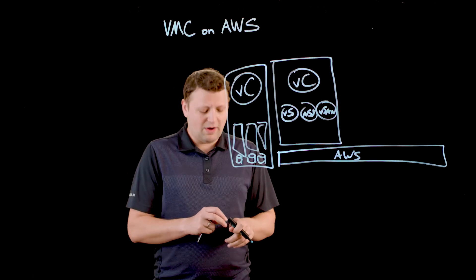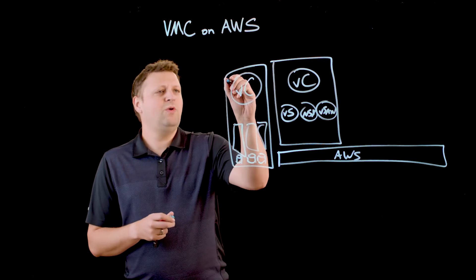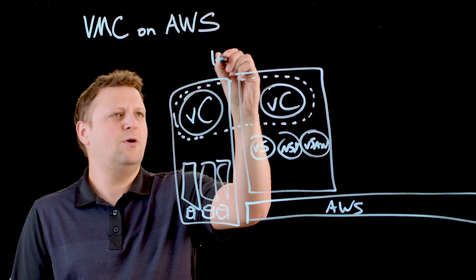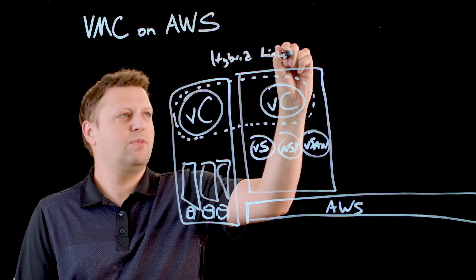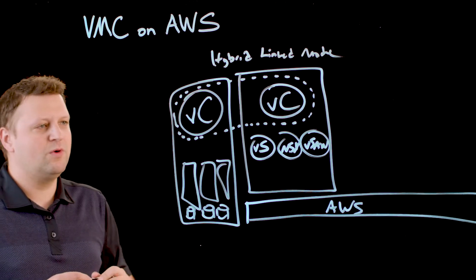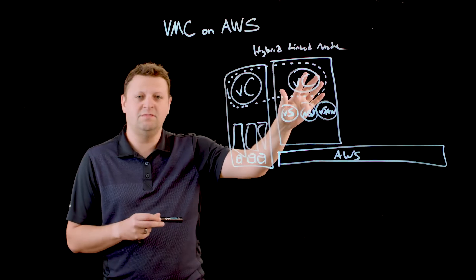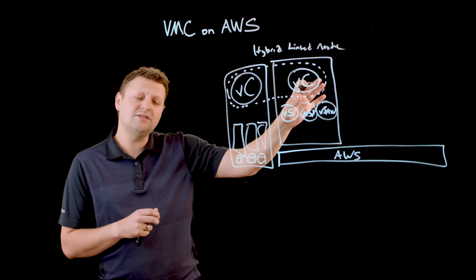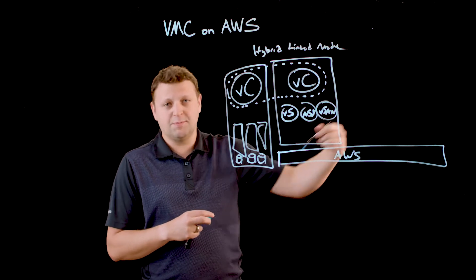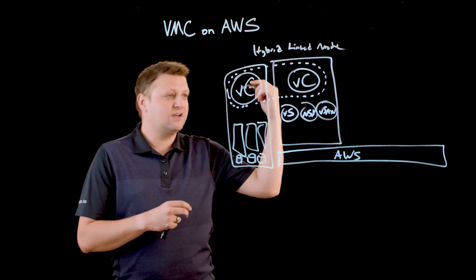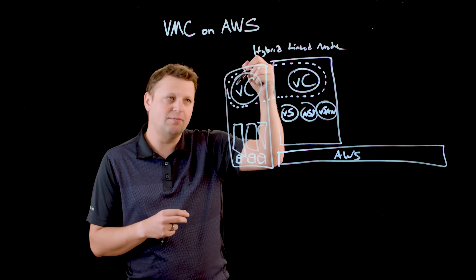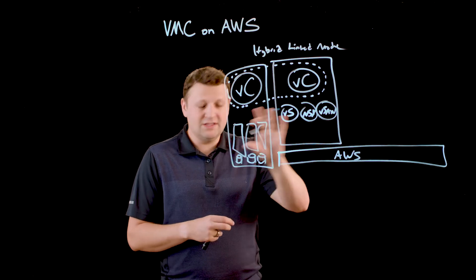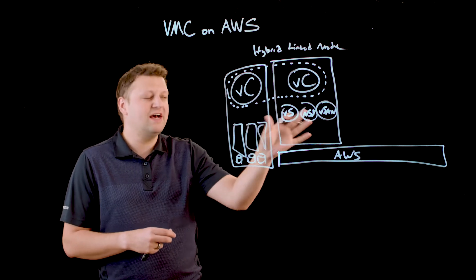Between on-prem and VMware Cloud on AWS there's something called Hybrid Linked Mode. If you're familiar with vSphere, you know that linked mode between vCenters previously required keeping them in sync for a supported configuration. With Hybrid Linked Mode, this cloud environment — perpetually managed by VMware and continually updated — is backwards compatible all the way back to vSphere 5.5, allowing a very easy migration path into VMware Cloud on AWS.